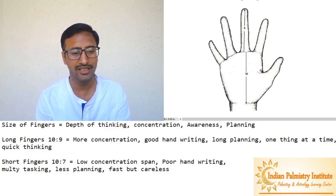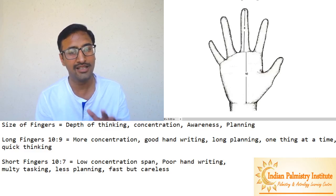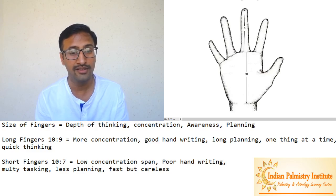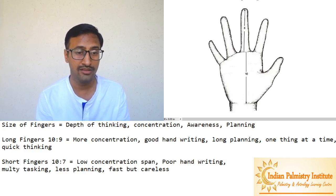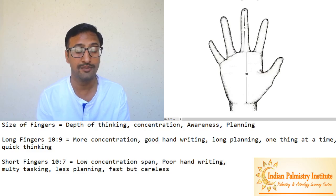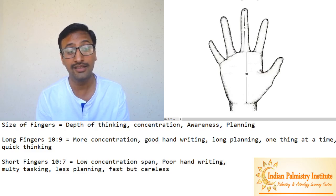On the other hand, if you have short fingers - the ratio is 10 is to 7 from your palm to finger - then these people will have low concentration span. They cannot put their mind too long on one task. They want to do many things at a time, multitasking.